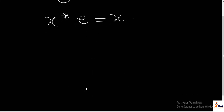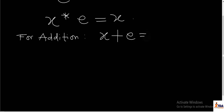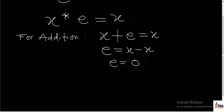For the basic ones, let's start with addition. For addition, we consider when we have a particular variable X plus the identity element E giving us X. We need to determine what value the identity element must be so that when you add variable X to it, you get the same X again. We find that E equals X minus X, so our identity element is zero. Therefore, the identity element for addition is zero.